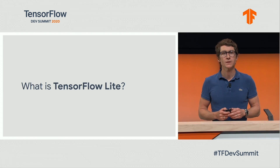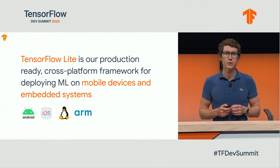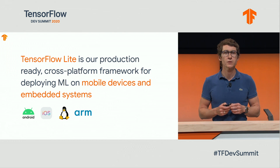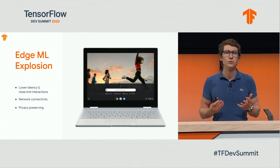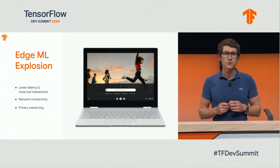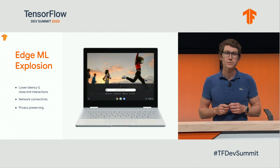So first of all, what is TensorFlow Lite? Hopefully many of you know this by now, but we love to re-emphasize it and also provide context for users who are new. TensorFlow Lite is our production-ready framework for deploying ML models on mobile devices and embedded systems. It can be deployed on Android, iOS, Linux, and other platforms used in edge computing. We are in the midst of a huge demand for doing ML on the edge, driven by the need for user experiences that require low latency, that work in situations with poor network connectivity, and enable privacy-preserving features. All of these are the reasons why we built TF Lite back in 2017.